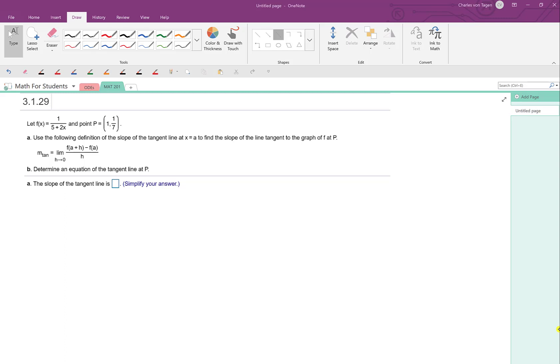Hey folks, I've had some of you ask about this question here. It's a really interesting question where we're asked to use the limit definition of the slope of the tangent line to compute the slope of the tangent line of this function f of x at this point where x is equal to 1.